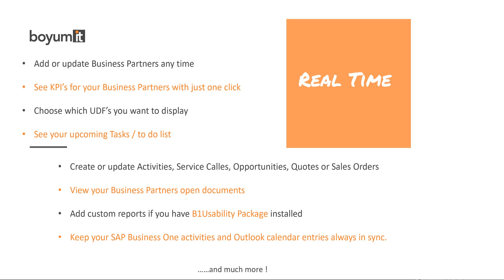It also happens the other way around. If anybody puts a document — a sales order, activity, quote, or invoice — into SAP Business One, the document will show up in CRM for Outlook right away as an open document.